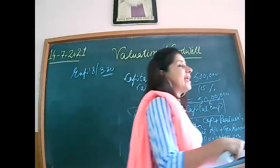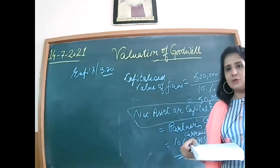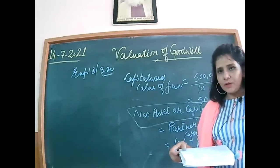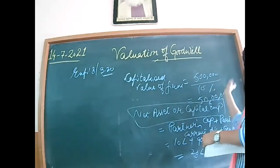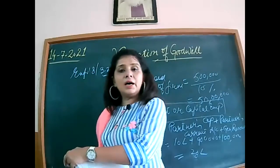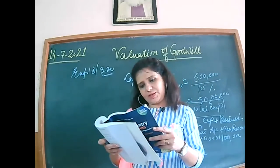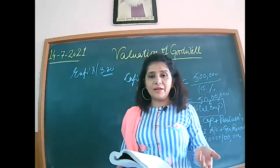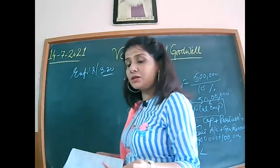Again repeating the formula: capitalized value of the firm equals average profit divided by rate of return, multiplied by 100. Goodwill equals capitalized value of firm minus capital employed. In the next example, there is a debit balance in a partner's current account, so that will be subtracted.